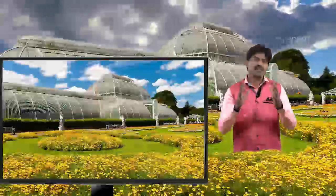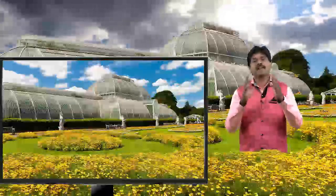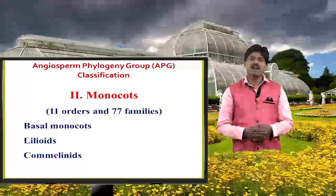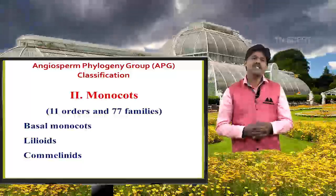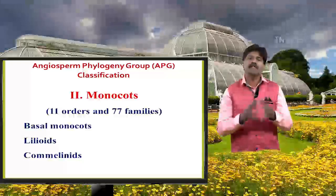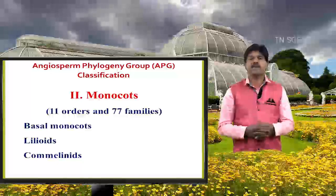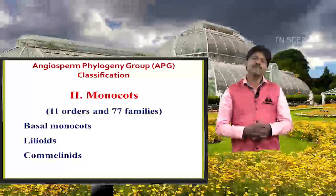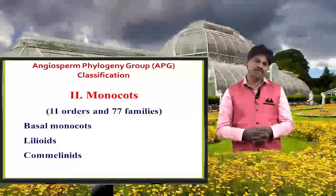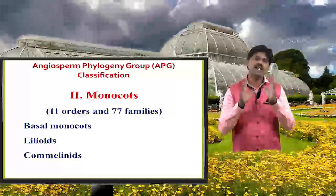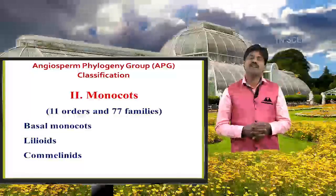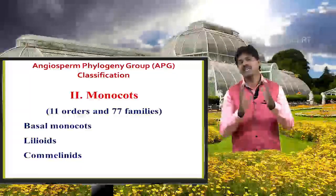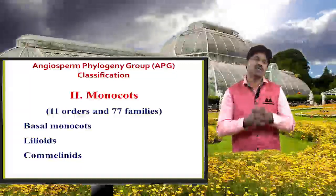The second clade is monocots. Monocots are divided into three important clades: the first is basal monocots, the second is lilioids, and the third is commelinids.